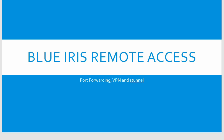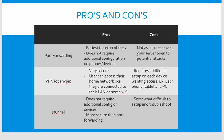STunnel is a proxy designed to add TLS encryption functionality to an existing server. There are three ways to set up BlueIris for a remote connection if you're not at home. The first is port forwarding, which is probably the most commonly used method, but it is not as secure and leaves your server open to potential attacks.